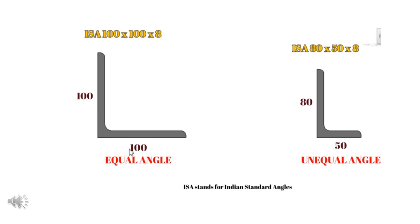The details are available in steel tables as sectional drawings. For the equal angle ISA 100 into 100 mm, both the vertical and horizontal dimensions are 100 mm, and the thickness of the angle is also specified. For unequal angles, the dimensions are 80 into 50 into 8.